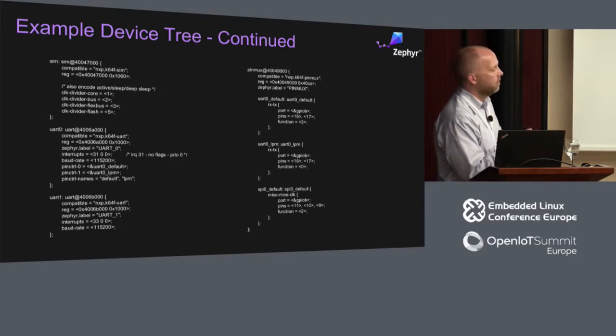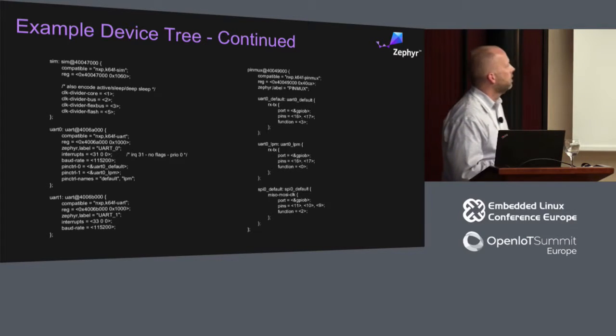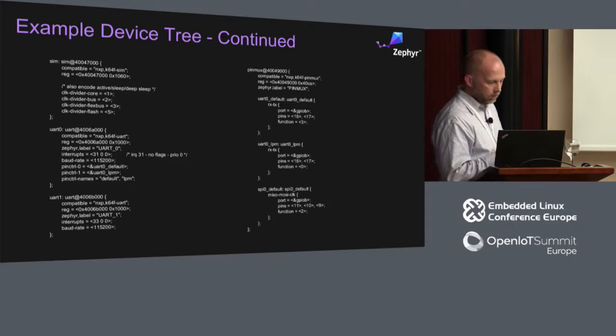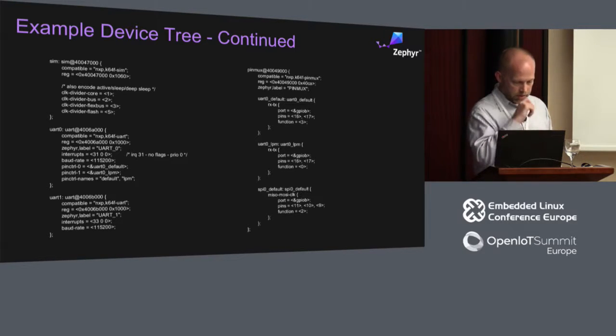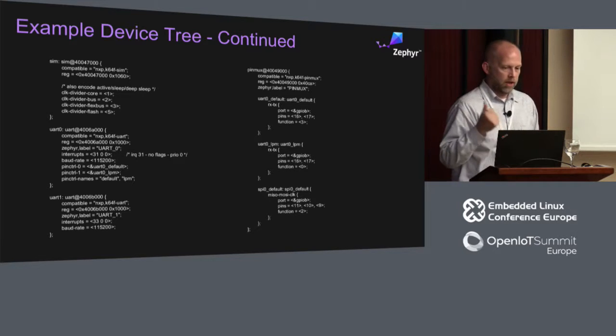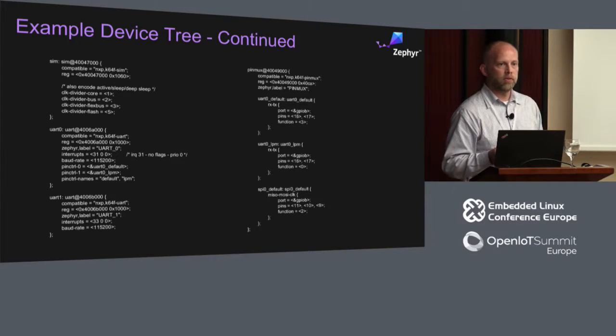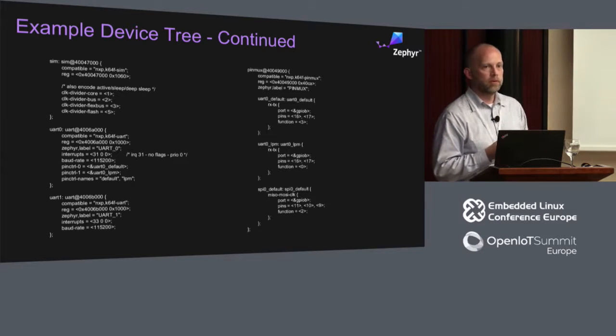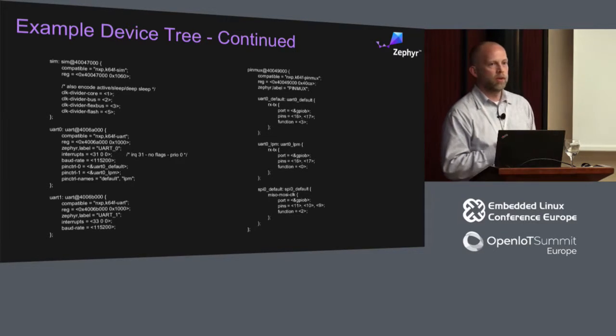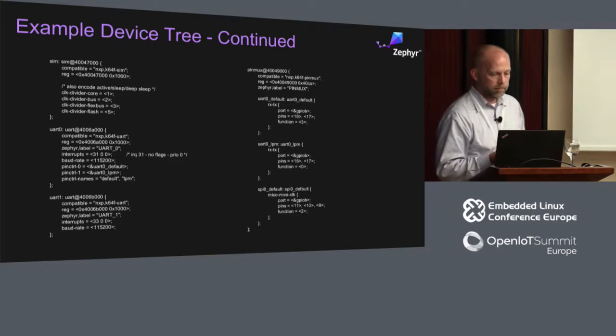The UART is a good example. The UART has a base address, a label — labels are used in the device API init — at least one interrupt, a baud rate, and some pins that are defined. I set up something very similar to the Linux kernel with the pin controls. For most devices you're going to want a default pin control or pin muxing that denotes the active set of pins, and you're also going to want to define a low-power mode. The reason is that some of these devices are going to be operating off coin cells, so you're going to want to be able to put them in low-power mode, and you need to describe the pins so the driver knows which set is active and which isn't.